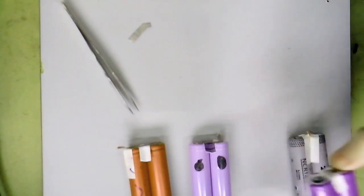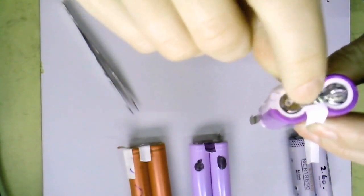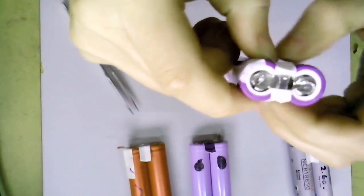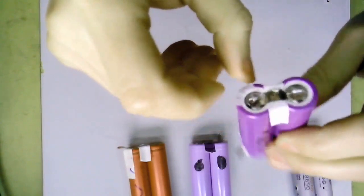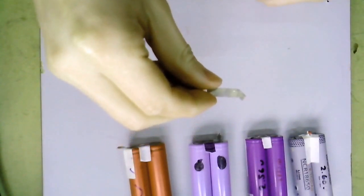I've just put some cardboard under where the bus bars are originally just to protect the positive from shorting to the negative, and I'm just going to pre-tin the pieces of bus bar.